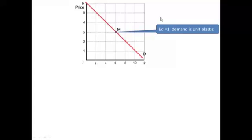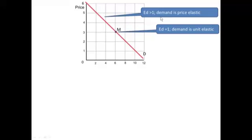Now at the midpoint we say that demand is unit elastic. It has a coefficient value of 1, whereas to the left or above the midpoint we say that demand is price elastic.